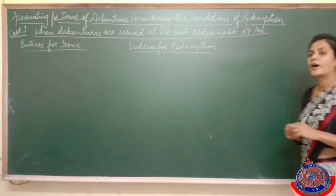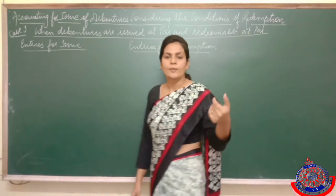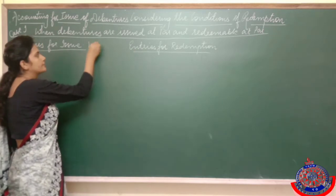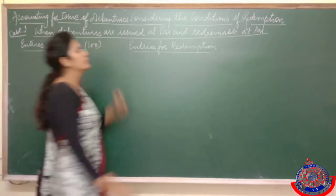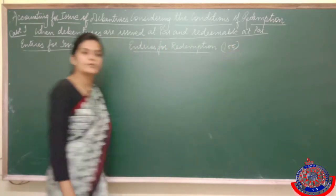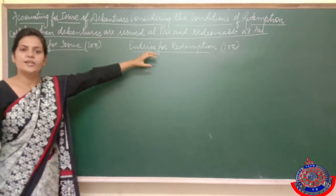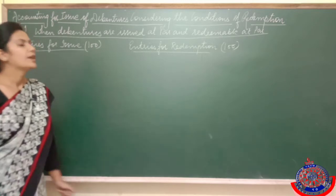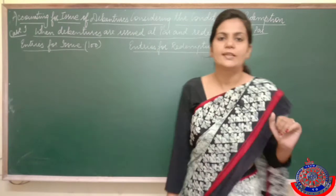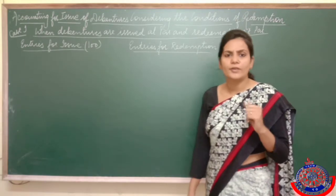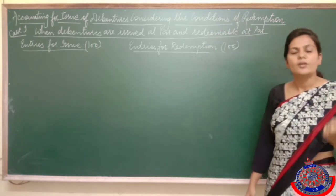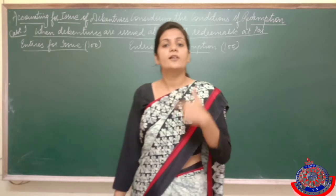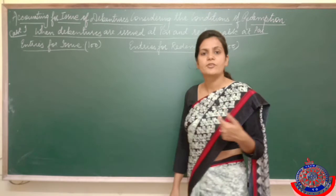The first case is when debentures are issued at par and redeemable at par. Redeemable means you have to pay back as much as you issued. Par means at face value — if debentures have been issued at 100, we have to redeem them at 100 only. We always call the lump sum; we never go for installments. So if they are interested in buying debentures, they have to give rupees 100 in lump sum.